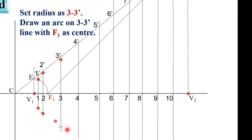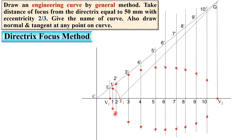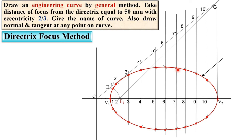Similarly, repeat the same process on the 4-4 dash, 5-5 dash, 6-6 dash, 7-7 dash, 8-8 dash, 9-9 dash, and finally the 10-10 dash lines, always using F1 as the center. Now join all the points by a smooth curve. Keep in mind it must be a smooth curve with no corner points — that is your final engineering curve.